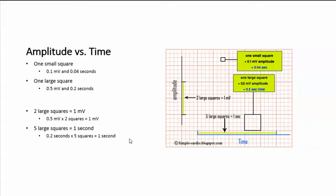Now you see down here we have time and amplitude. Each small square is 0.1 millivolts in amplitude and 0.04 seconds in time.